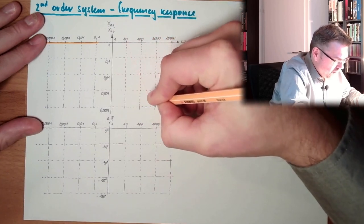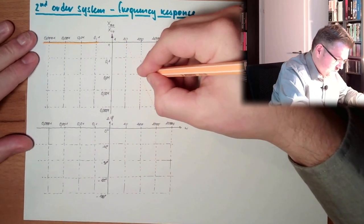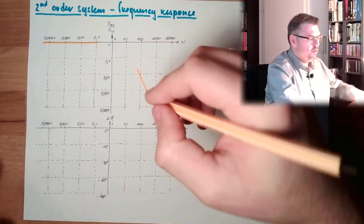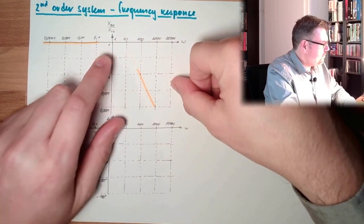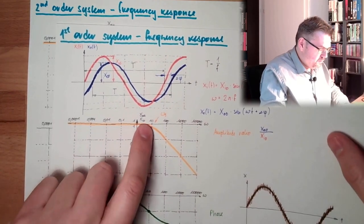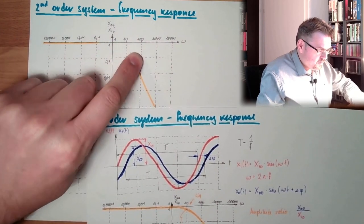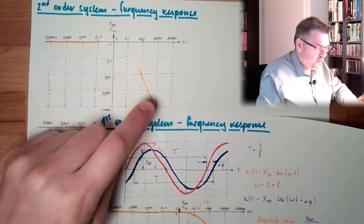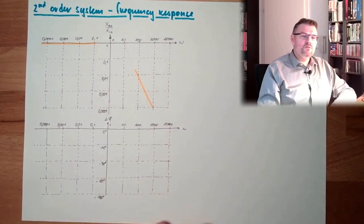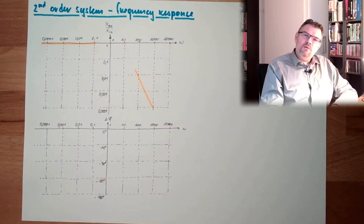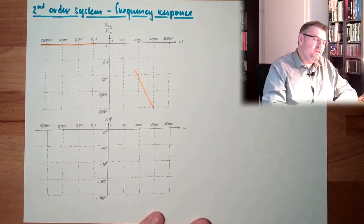So we are going down twice as fast above the natural frequency compared to the first order system. We also have different behaviors in between, because there is a damping factor — depending on the damping factor, we have different behaviors near the natural frequency.